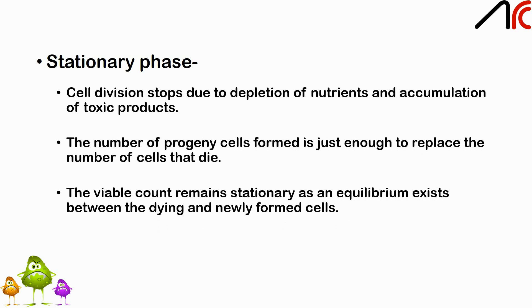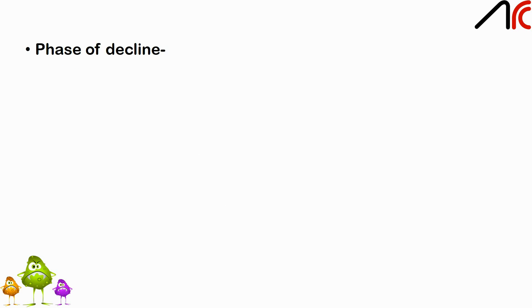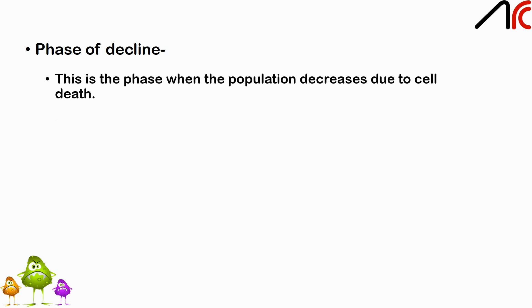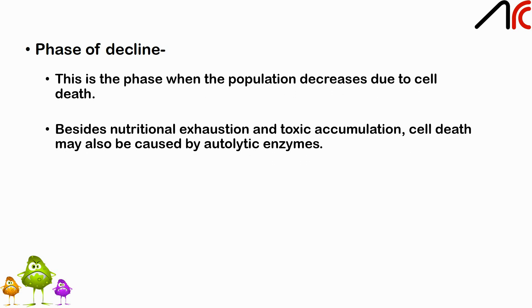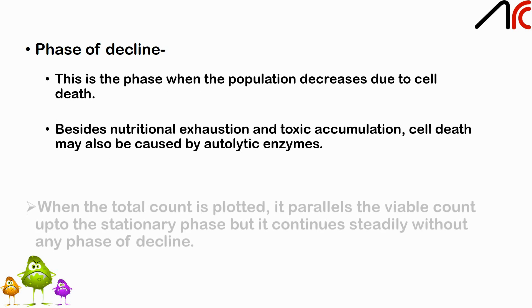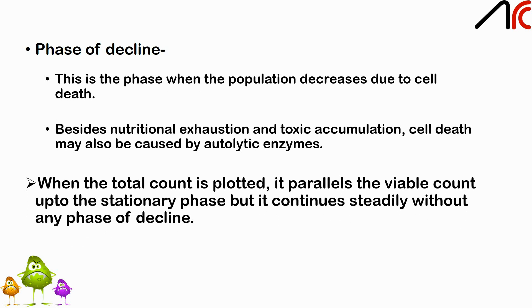The viable count remains stationary as an equilibrium exists between dying and newly formed cells. The last phase is the phase of decline, when the population decreases due to cell death. Besides nutritional exhaustion and toxic accumulation, cell death may also be caused by autolytic enzymes. When the total count is plotted, it parallels the viable count up to the stationary phase, but then continues steadily without any phase of decline.